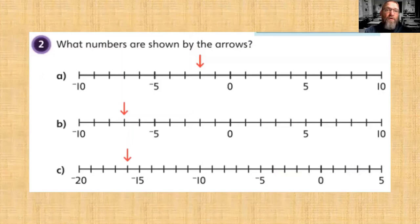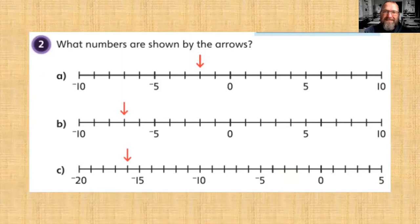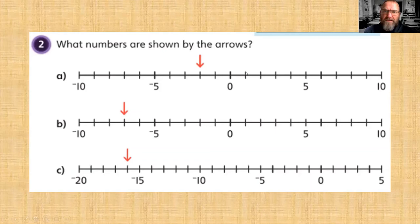Let's look at question two: what numbers are shown by the arrows? First, find the zero point — here is zero on the first number line. We need to find what the steps are. Let's check: two, four, six, eight — no, let's try again: one, two, three, four, five. The intervals go up in single digits, in ones. Counting back from zero: minus one, minus two.